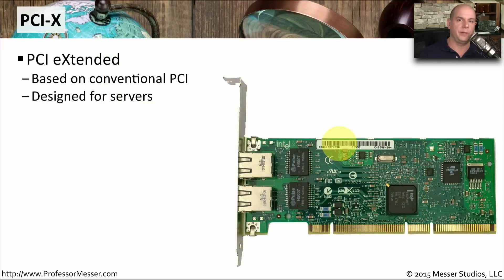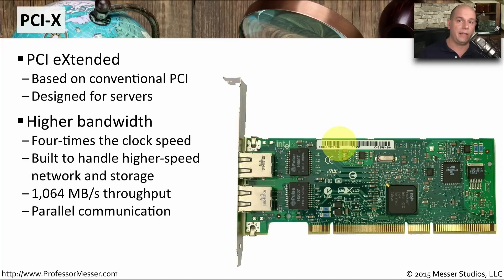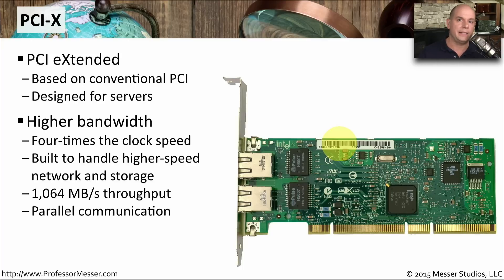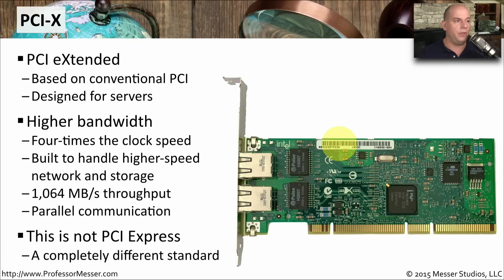Another expansion card interface type you need to know for the A+ certification is PCI-X — the PCI Extended. It was based on conventional PCI but designed for servers, which need a lot of throughput since many people are using them simultaneously. PCI-X had four times the clock speed and up to 1,064 megabytes per second of throughput, and just like conventional PCI, it uses parallel communication. Be careful: there is an interface called PCI-Express, and although there is an X in PCI-X, they are two very different standards — PCI-X is PCI Extended, not PCI Express. Do not confuse the two.